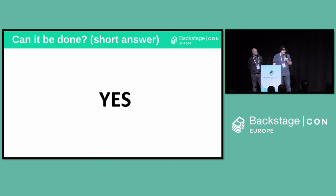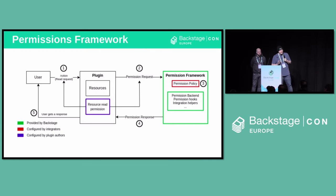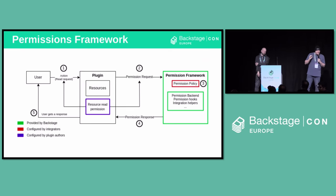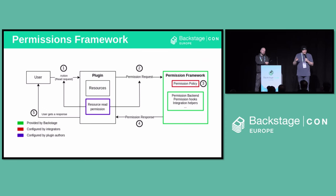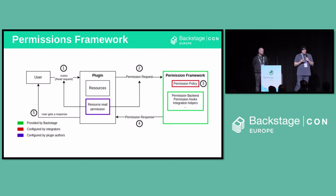So, can it be done? Obviously the answer is yes. At a high level, the Backstage permissions framework works like this: a user triggers some action like a read request, that goes through the plugin, which forwards it to the permissions framework backend, which delegates to the permission policy — typically defined in TypeScript. That makes a decision and forwards it back to the plugin, which either allows or denies the user.